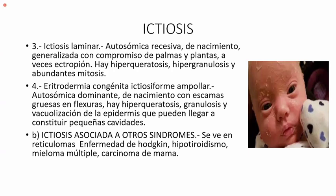Otro tipo es la eritrodermia ictiosiforme congénita ampollosa, que es autosómica dominante. De nacimiento, con escamas gruesas en flexuras; ya no respeta las flexuras como la vulgar. Hay hiperhidrosis, granulosis y vacuolización del epidermis, que puede llegar a constituir pequeñas cavidades o huequitos en la piel.